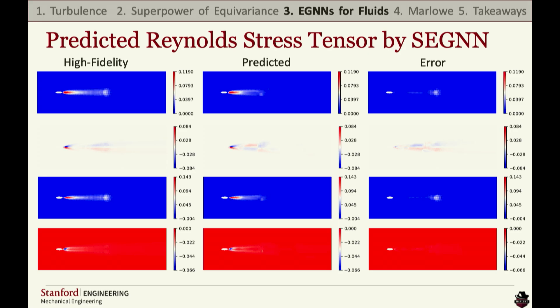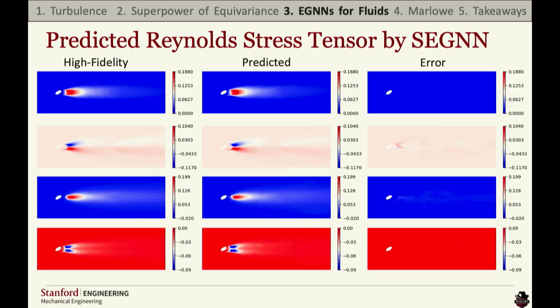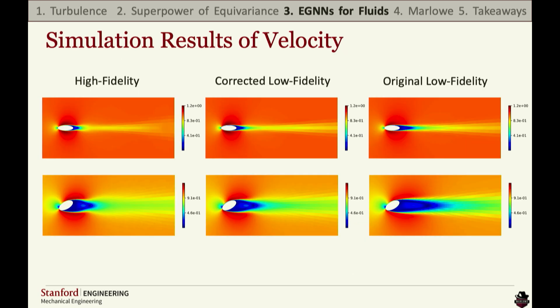If you observe the far left column — the error — we can see all the errors are actually downstream of the object, which is great, as the most important information is near the body. The same story applies for a different object. But what really matters is whether an engineer can use this to help design their system. We feed that prediction back into the simulation and get a new flow field. With the corrected flow field, the velocity field looks much more like its high-fidelity counterpart, and the drag, instead of being about 25% inaccurate, is now about 5% — a huge improvement.